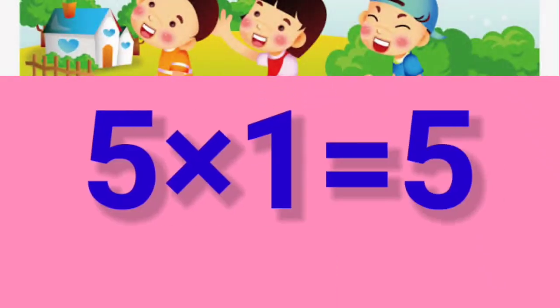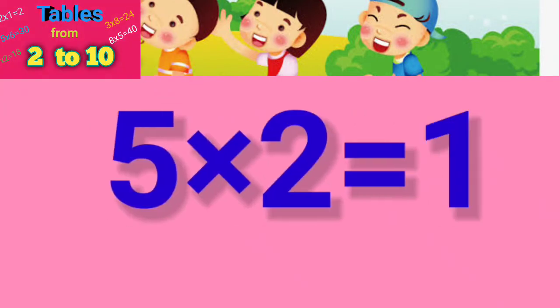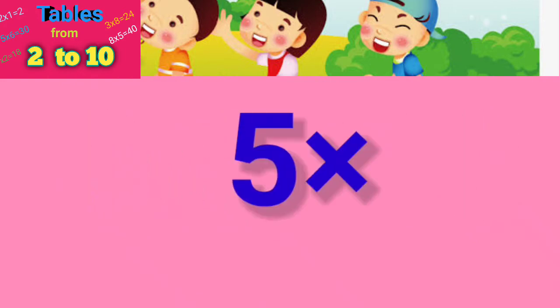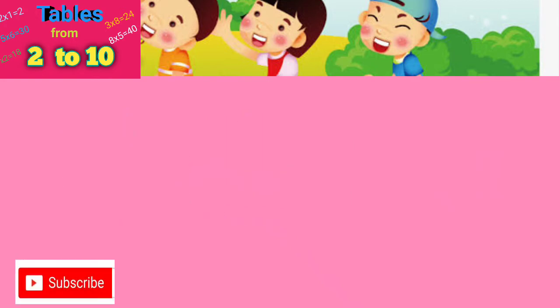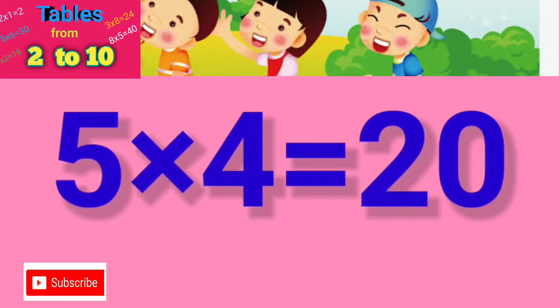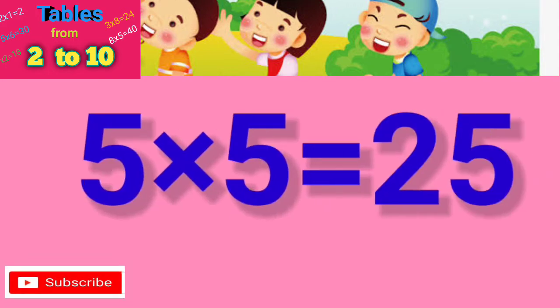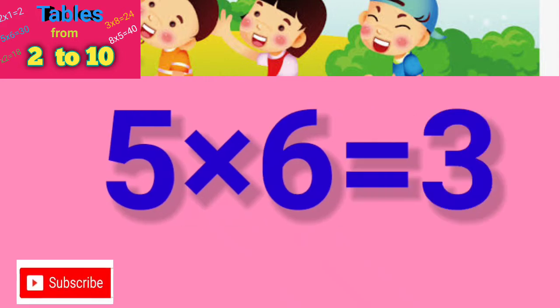Table of 5: 5×1=5, 5×2=10, 5×3=15, 5×4=20, 5×5=25, 5×6=30.